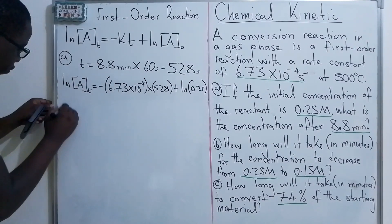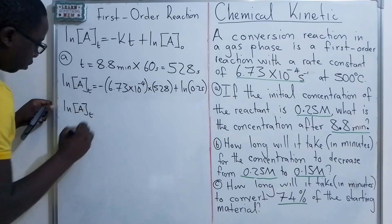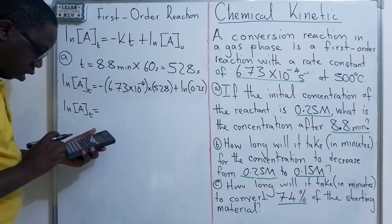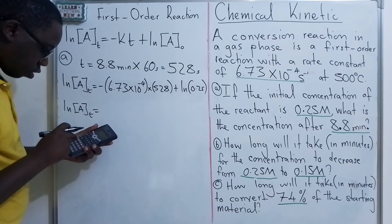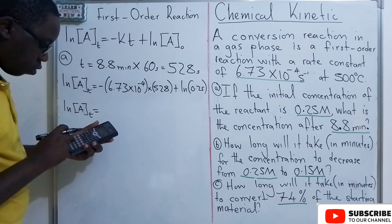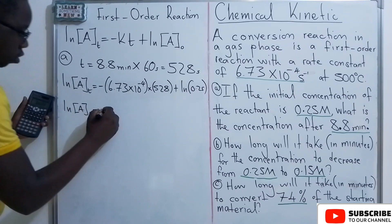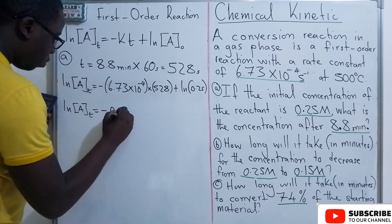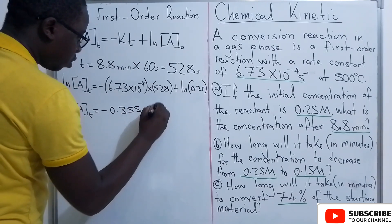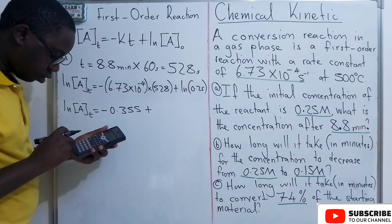So we have ln([A]t) equals, we are multiplying 6.73 × 10^-4 multiplying it with 528. It is giving us the value of -0.3355 plus the natural log of 0.25.